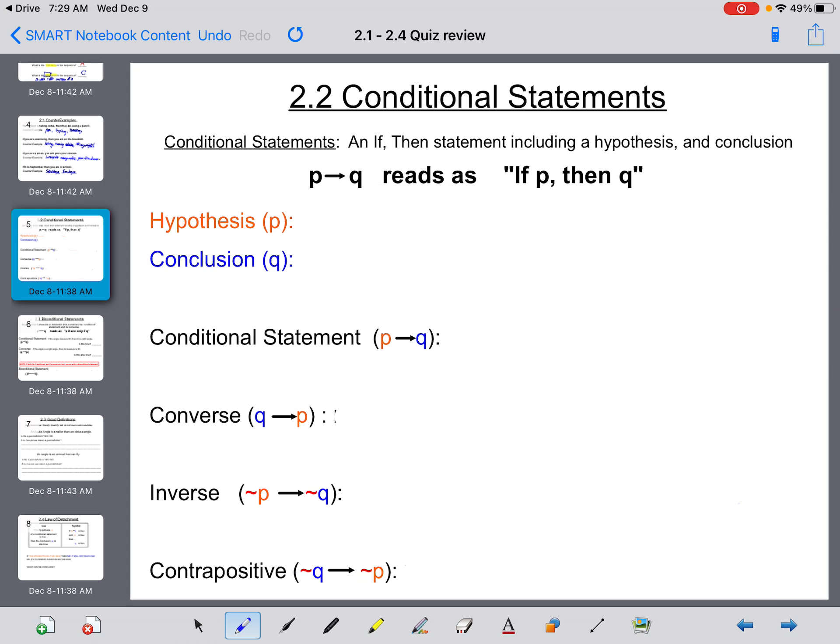2.2, your conditional statements. Your conditional statement is an if-then statement including a hypothesis and a conclusion. Remember, your hypothesis is P, your conclusion is Q. Your hypothesis, there is four feet of snow. Your conclusion, it is a snow day. So if you're going to write your conditional statement, if P then Q, it would read: if there is four feet of snow, then it is a snow day.